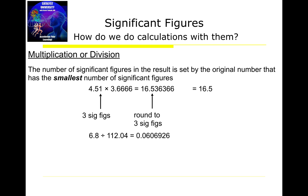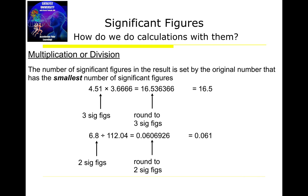Here's a division problem, working the exact same way: 6.8 divided by 112.04. The first number has two significant digits — the 6 and the 8 — and 112.04 has five. Therefore I'm forced to round the calculator result to two significant digits, because I go with the smaller one. Rounding to two significant digits gives 0.061, where that second 6 causes the indicated zero to round up.